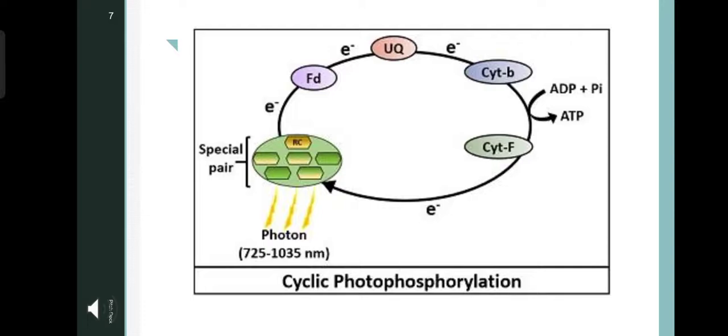The excited electron from the special pair of chlorophyll passes through ferredoxin, ubiquinone, cytochrome B, and cytochrome F and finally into the special pair of chlorophyll. Since the electrons return back to the same reaction center, this is cyclic photophosphorylation. During the transfer of electron from cytochrome B to cytochrome F, ADP is converted into ATP.